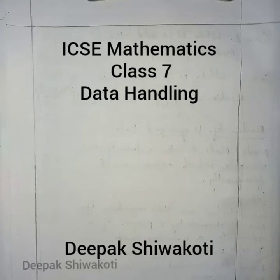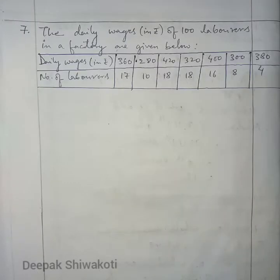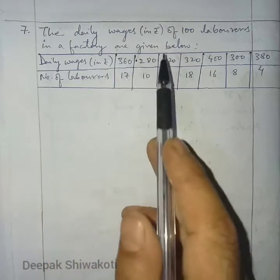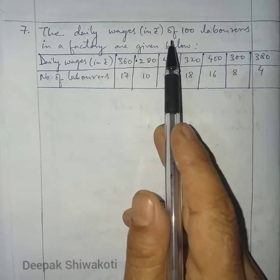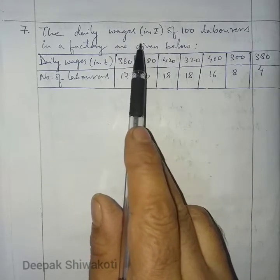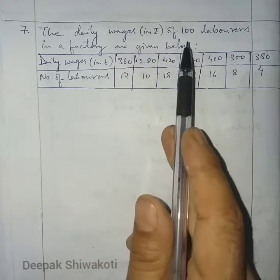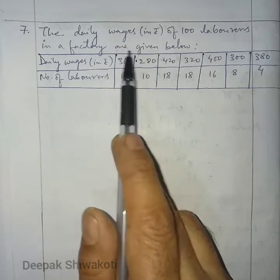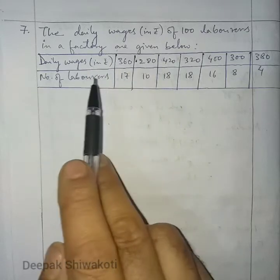Welcome to Class 7 Mathematics. We are in Data Handling, Exercise 24B, Question number 7. The daily wages in rupees of 100 laborers in a factory are given below.